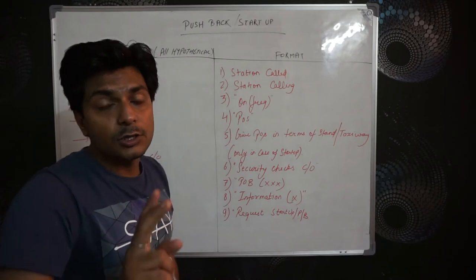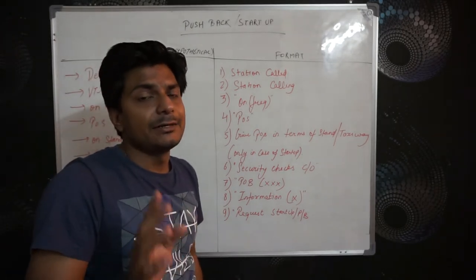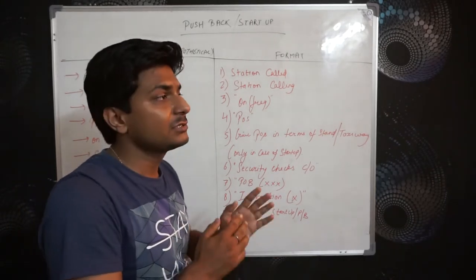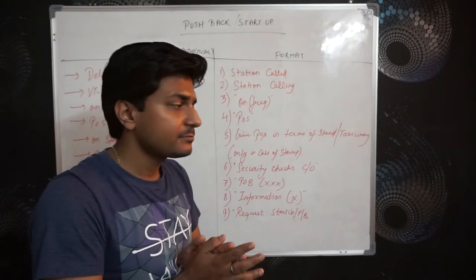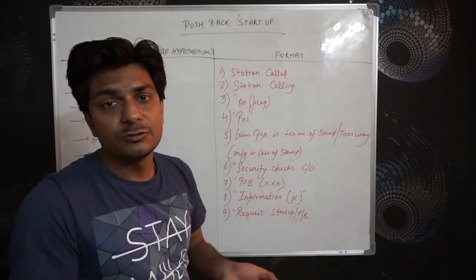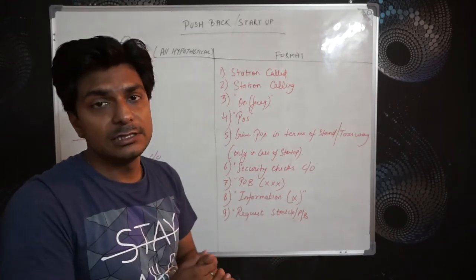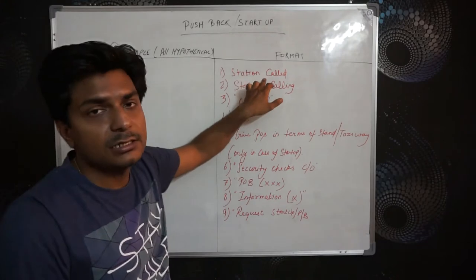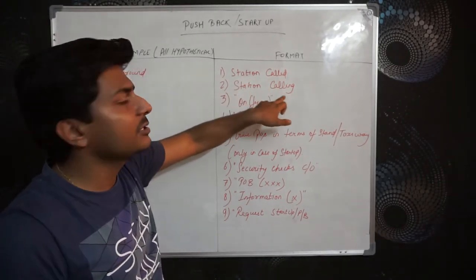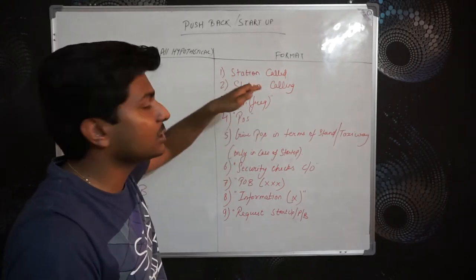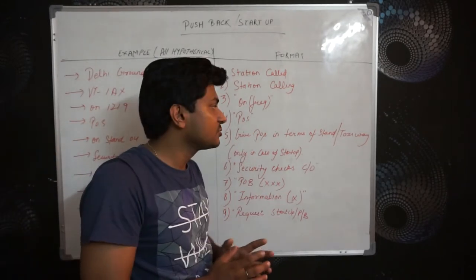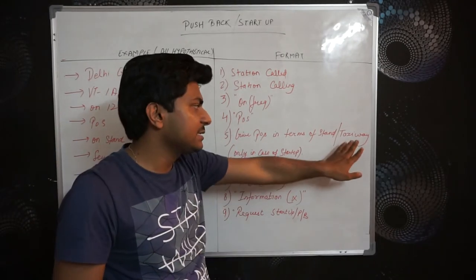The station called will be Ground — or Tower in cases where Ground is not available, since Ground takes care of the apron area up to the runway holding point. If there is no Ground, Tower takes care of that entire area. So you will be calling either the Tower unit or the Ground/SMC unit. Then station calling is your call sign. Next is the frequency of the ATC unit you are calling. Then your position — for pushback and startup, this is given in terms of stand or taxiway.